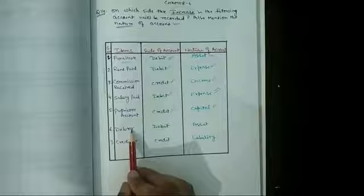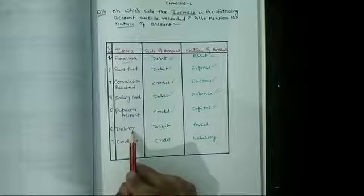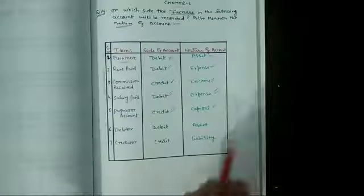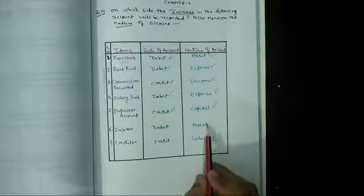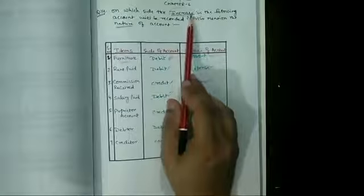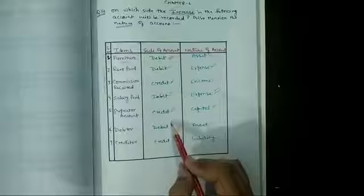The sixth one is debtors. Debtors हमारी कौन होते हैं? जो future में हमें पैसा देते हैं. क्यों देते हैं? क्योंकि हम उन्हें उधारी में कुछ goods sold करते हैं. तो वो हमारी क्या होगे? Asset. Debtor क्या होती है? Asset. और Asset जब हमारा increase होता है then it will be debit.